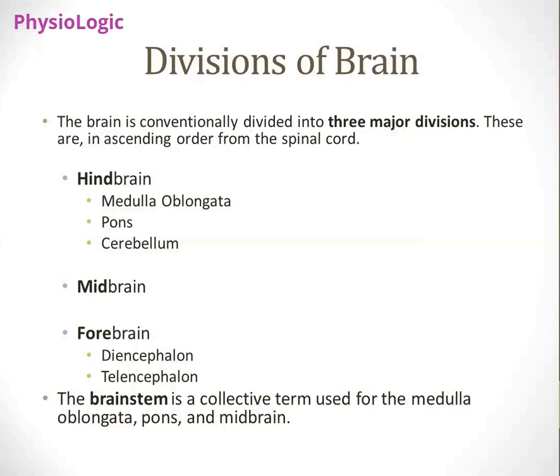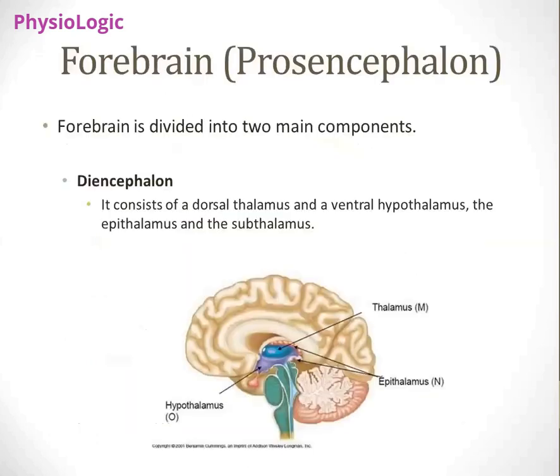The Latin name for midbrain is mesencephalon. Forebrain's other name is prosencephalon. When we look at the embryological development of the nervous system, these terminologies are quite often used. So the forebrain is collectively known as prosencephalon and is divided into two main components: diencephalon and telencephalon.